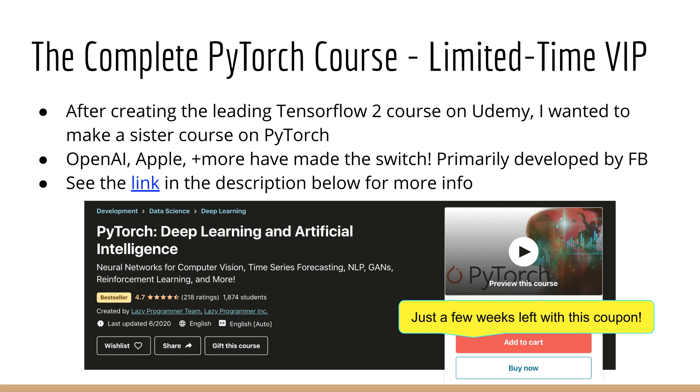Use the link in the description below to get your copy of the VIP version of PyTorch today. Remember that the VIP version contains entire sections of material that will not be available in the non-VIP version of the course. This course contains everything from the basics like ANNs, CNNs, and RNNs all the way up to transfer learning, recommender systems, GANs, NLP, facial recognition, and building a stock trading bot using deep Q-learning.